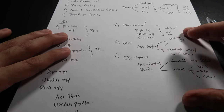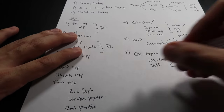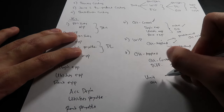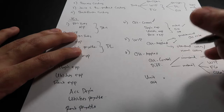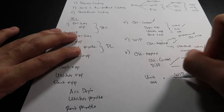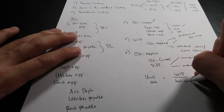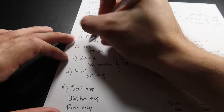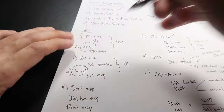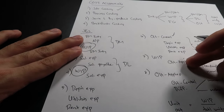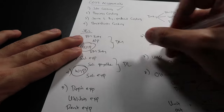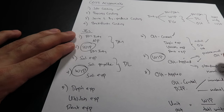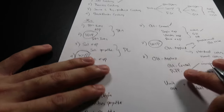For job costing, you are usually asked: how much is the unit cost? The formula is: unit cost equals work in process divided by total units. The WIP includes materials, labor, and overhead — using standard cost, not actual cost. Add the three components and divide by number of units to get the unit cost for that particular job.